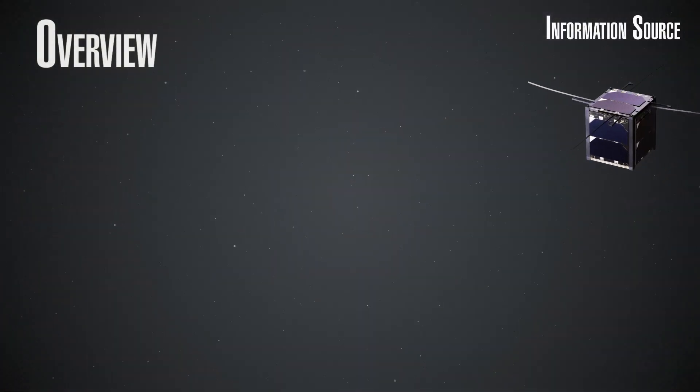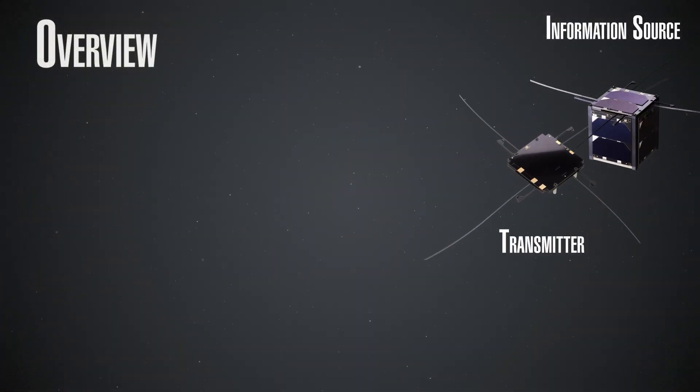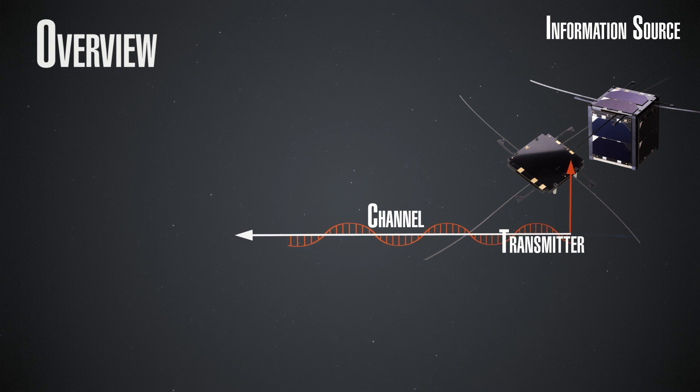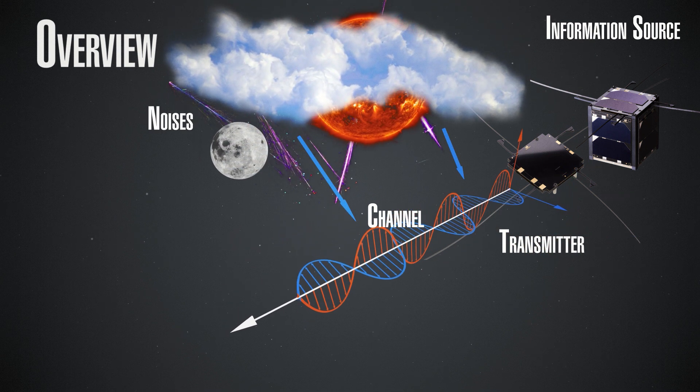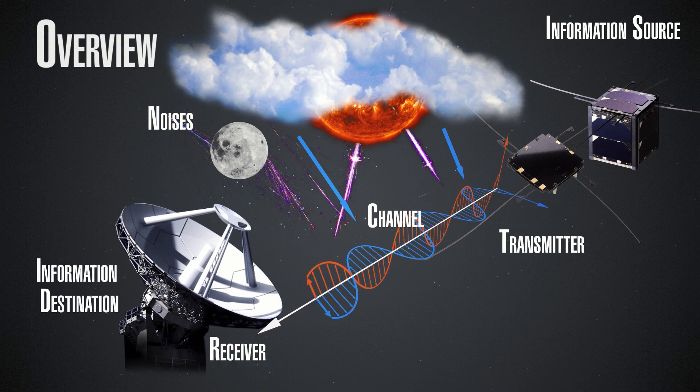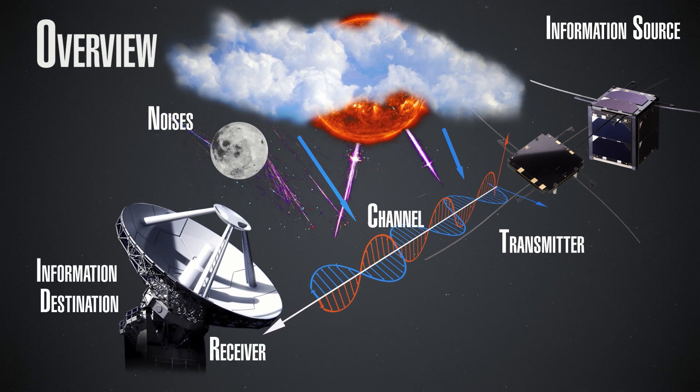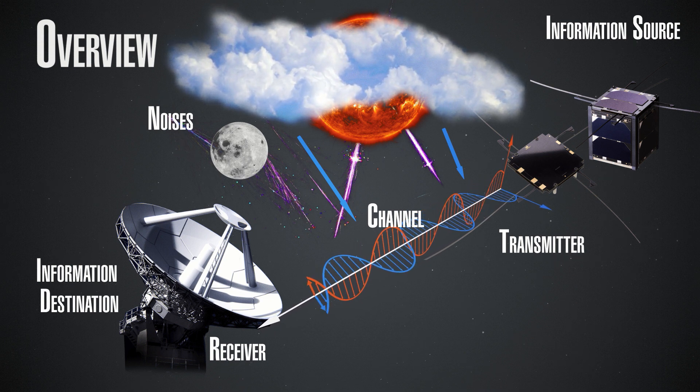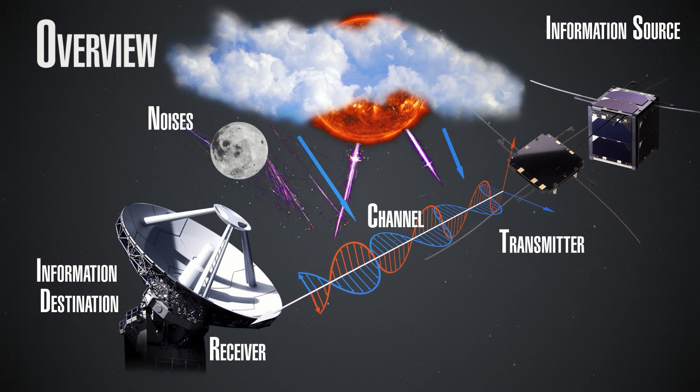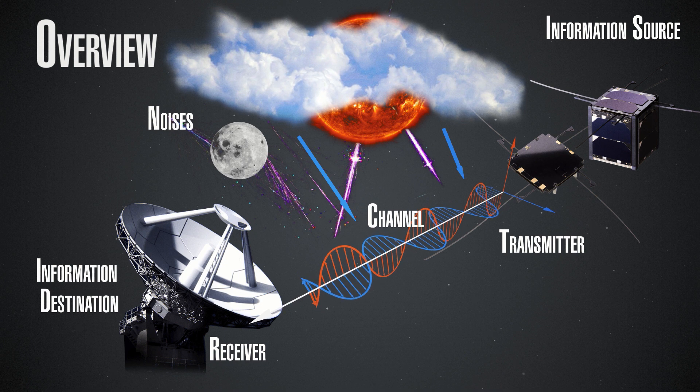So basically, a communication system has some key elements. Those are: the information source, a transmitter, the message we are transmitting, a receiver, and a destination. They allow us to exchange signals or information from source to destination through what is called a channel, which represents the way that the signal uses to move from one source towards the destination.